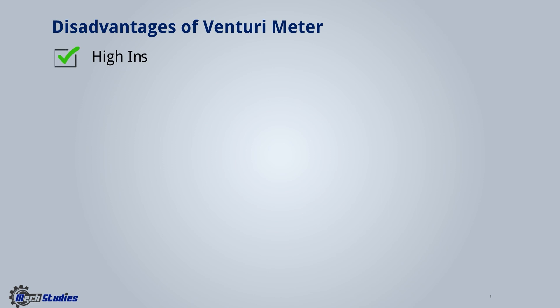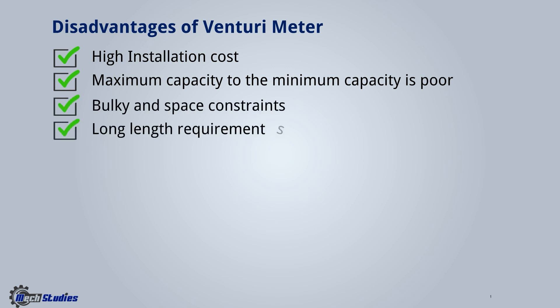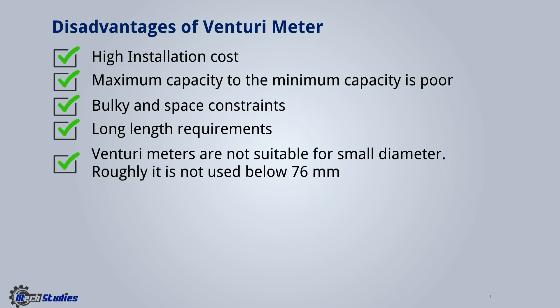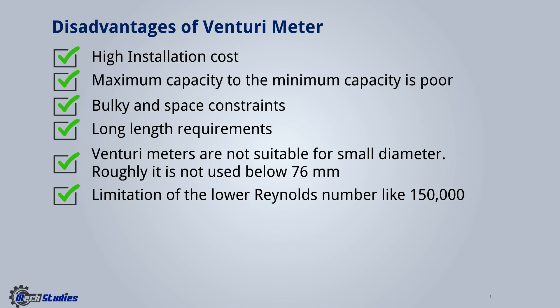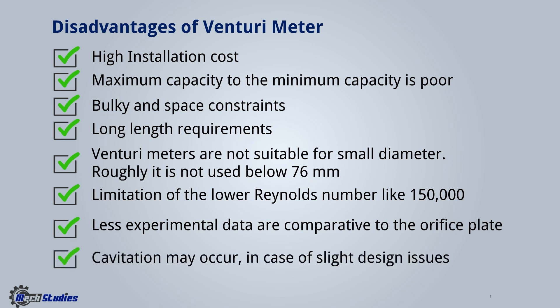Disadvantages of Venturimeters include: very high installation cost; poor turndown ratio (maximum to minimum capacity); bulk and space constraints; long length requirements; not suitable for small diameters — roughly not used below 76 mm; limitation of lower Reynolds numbers around 150,000; less experimental data compared to orifice plates; and cavitation may occur in case of slight design issues.